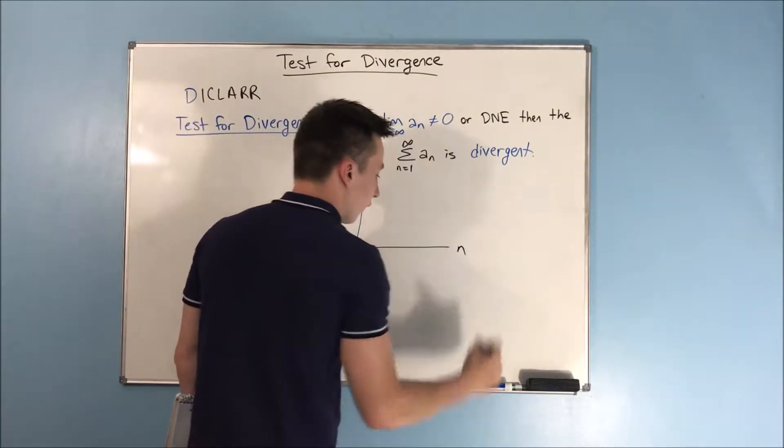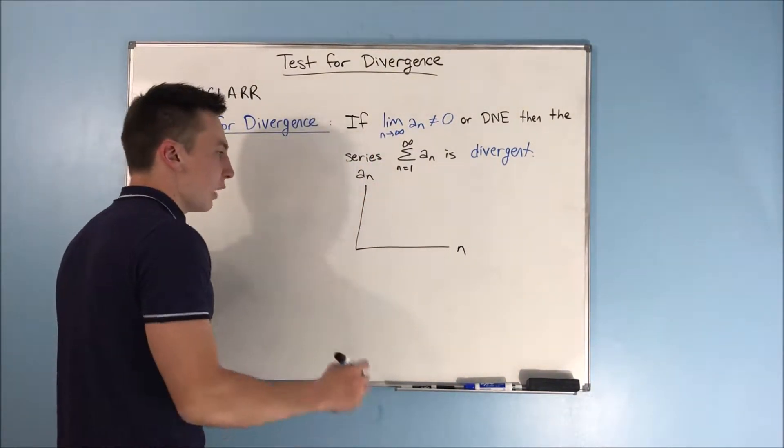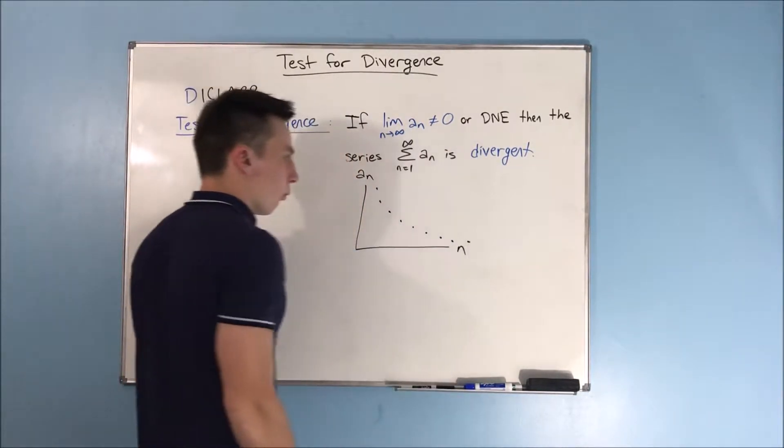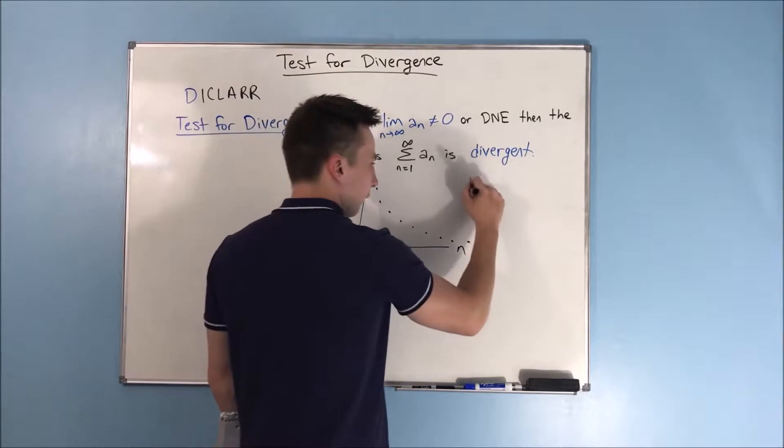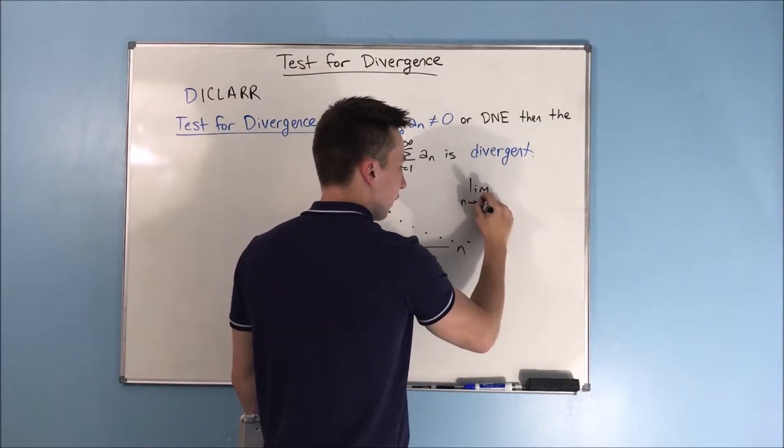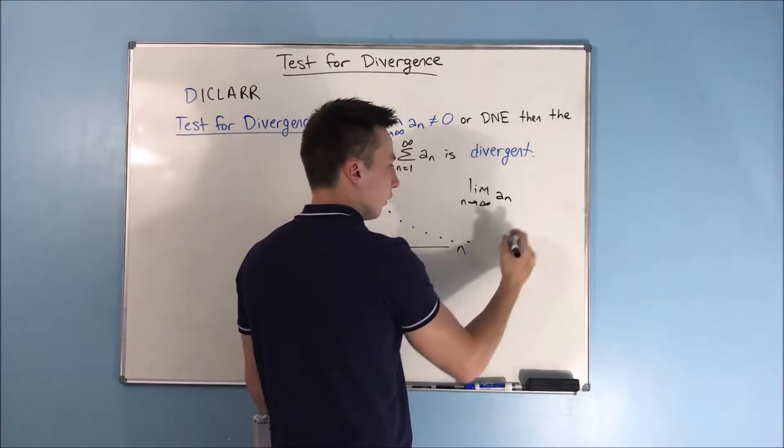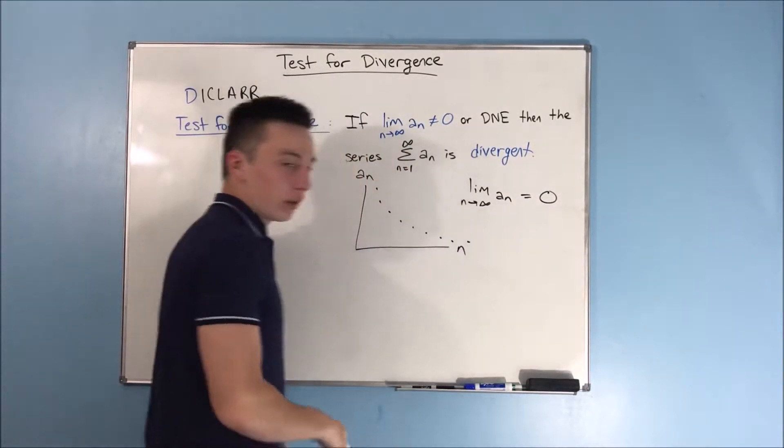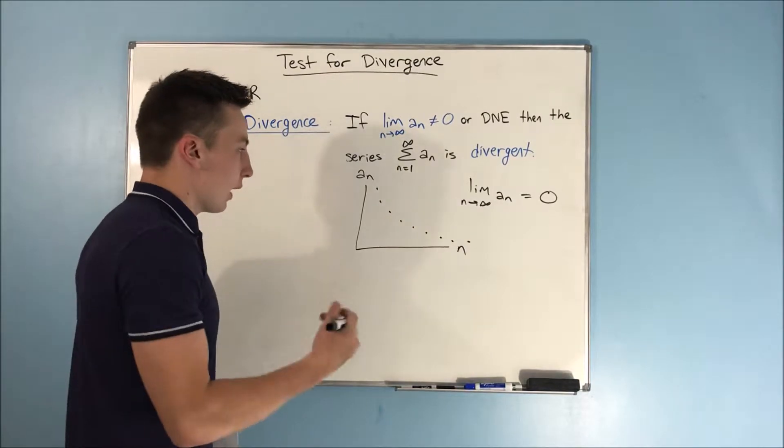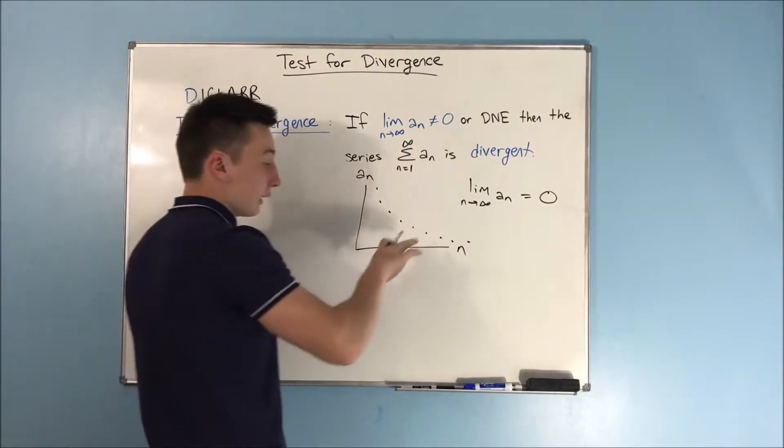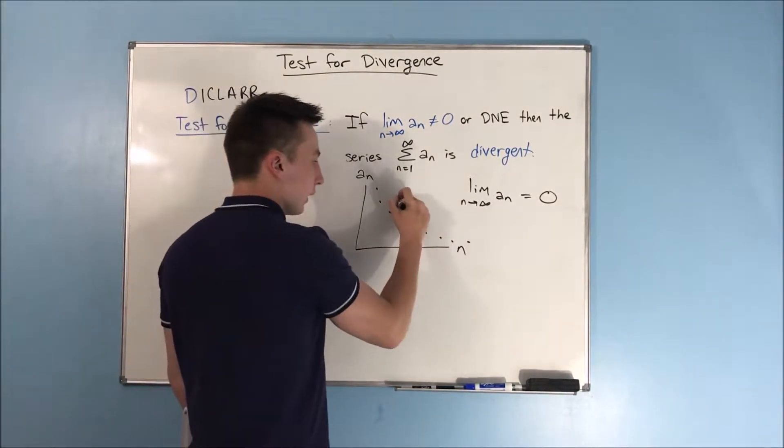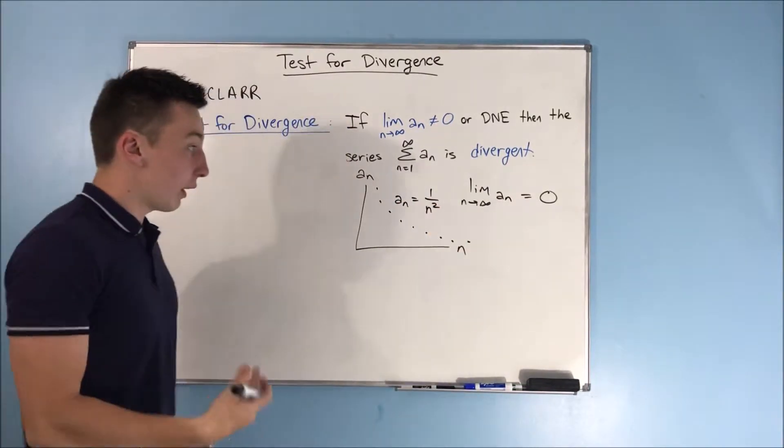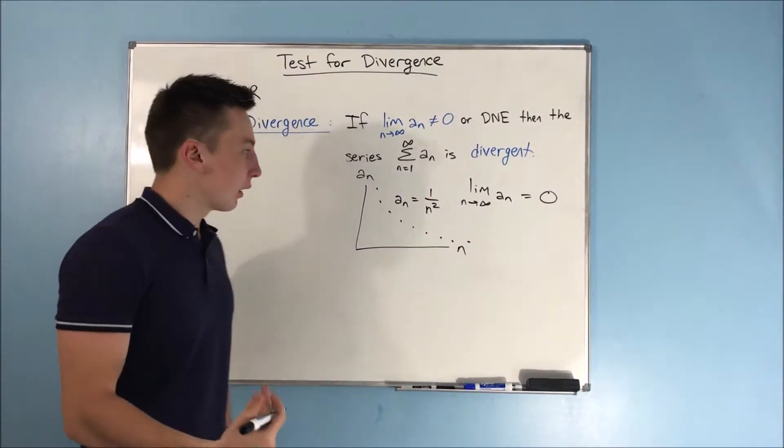Let's say we have an a sub n versus n graph. And we have something that looks like this. Well, we know here that the limit as n approaches infinity of a sub n will definitely equal zero, right? It's approaching zero as n goes to infinity. So this has a chance of being convergent. What if it was something like a sub n equals one over n squared? That we know is convergent.